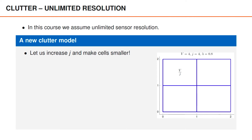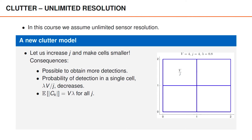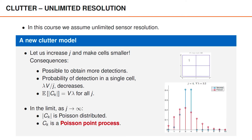Let us look at what happens as we increase the number of cells. It becomes theoretically possible to obtain more clutter detections since there are more cells, but the probability of obtaining a detection in a single cell decreases, and the expected number of detections remains constantly V times lambda as we increase J. This follows from the fact that the number of clutter detections is binomially distributed with parameters J and V times lambda over J. Crucially, the binomial distribution describing the number of clutter detections converges to a Poisson distribution as the number of cells increases.